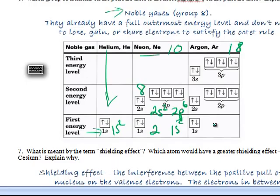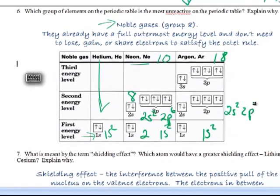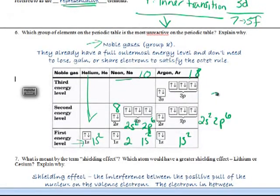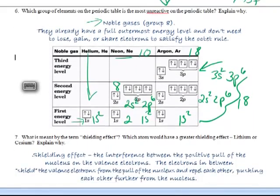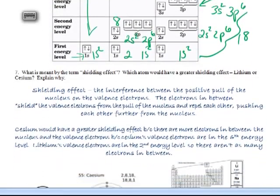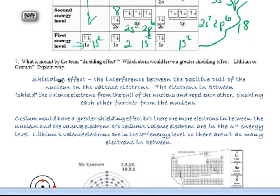Argon's got 18. It's got the 1s2 filled, then the 2s2 and the 2p6 are filled. And then we move into the third energy level. 3s2, 3p6 are filled. So that all adds up to 18. And this is complete. It's nice and happy. So these guys are kind of the stuck-up elements. They don't deal with any other element on the periodic table. They do their own thing because they don't need any more electrons or need to get rid of any electrons.